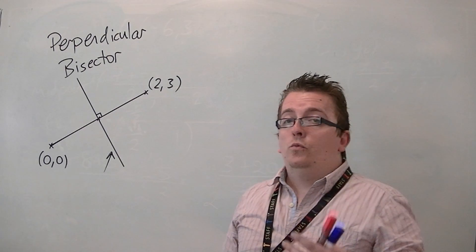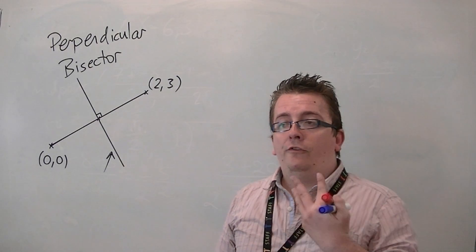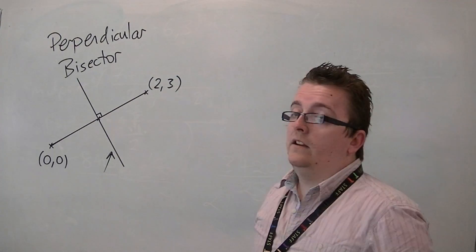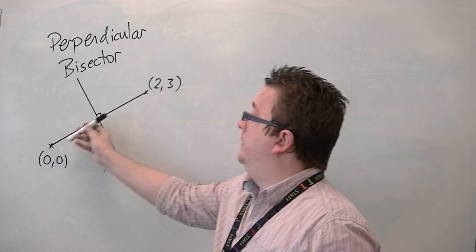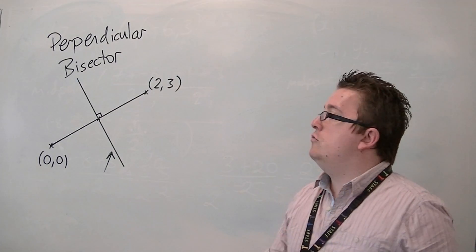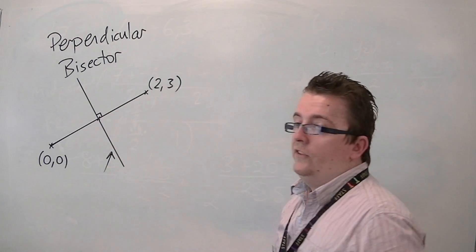Now, we know that the gradient of a perpendicular line uses the negative reciprocal of the gradient of this line. So I'm going to need to find the gradient of this line, as well as its midpoint. So, let's do the midpoint bit first.